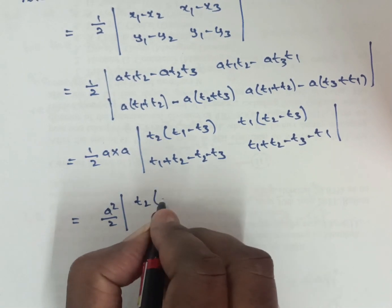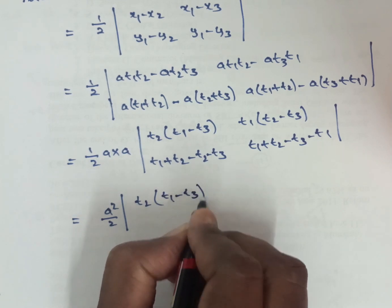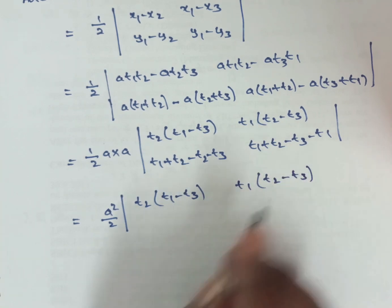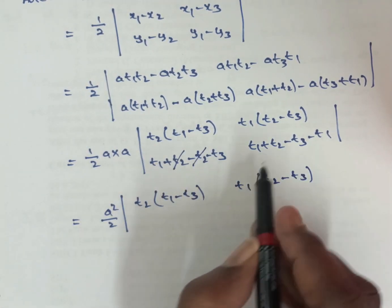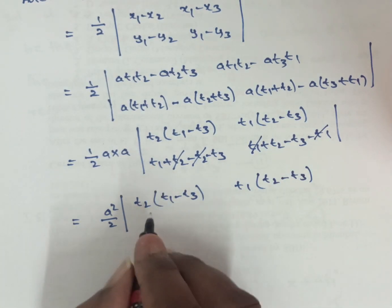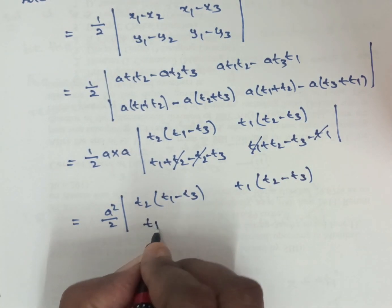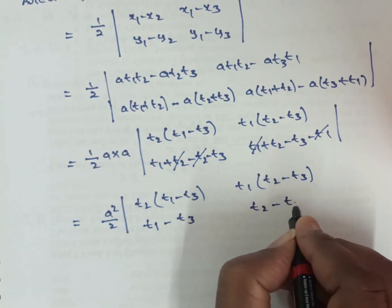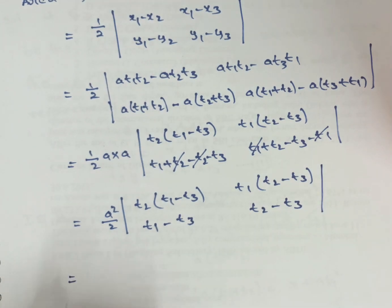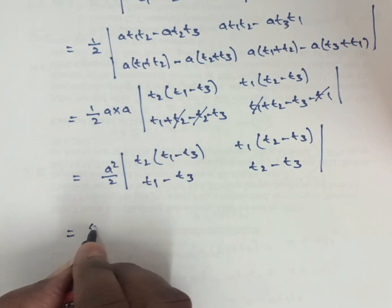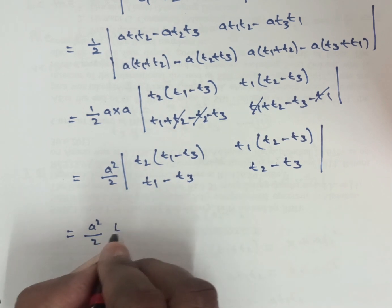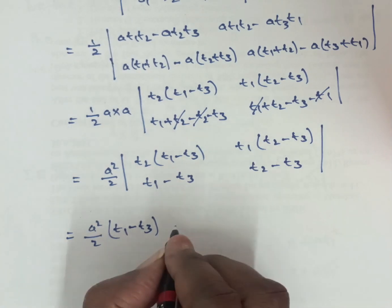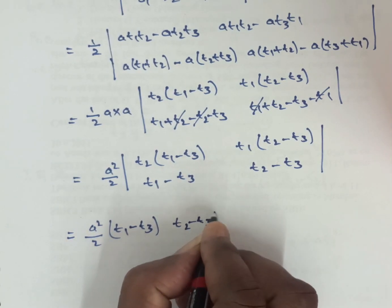From the first row, factor out t2 and the remaining term gives (t1 − t3); factor t1 and remaining gives (t2 − t3). From the second row similarly: a(t1 + t2) − a(t2 + t3) = a(t1 − t3), and a(t1 + t2) − a(t3 + t1) = a(t2 − t3). So we get (a²/2) × modulus of (t1 − t3)(t2 − t3).